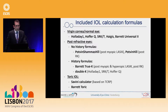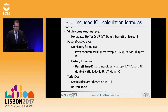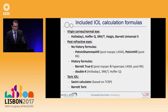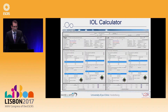These are the IOL formulas currently included: for normal or virgin eyes, the regular formulas used in daily practice, and even after refractive surgery — cases with no history and history formulas — Barrett True K and the Double K formulas from Holladay, which use keratometry values instead of only keratometric refractive values for Barrett True K. The Toric IOL formulas — the Savini calculator and the Barrett Toric calculator — are also integrated.